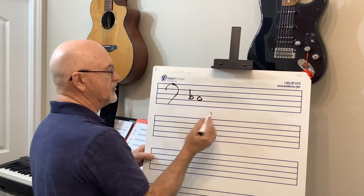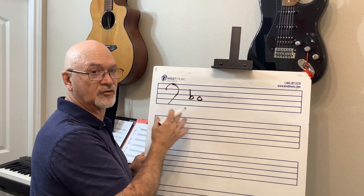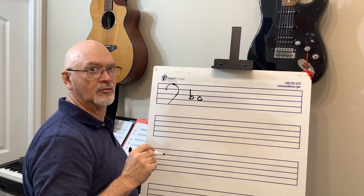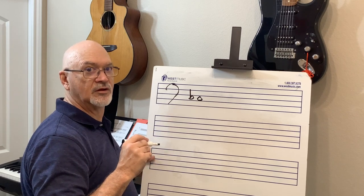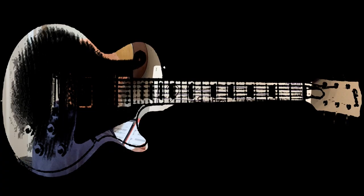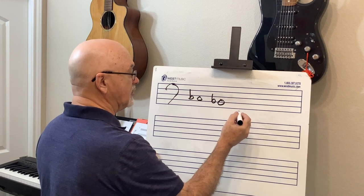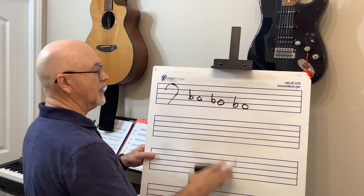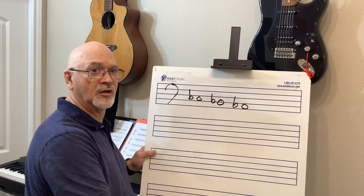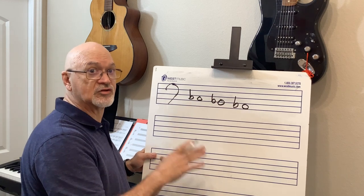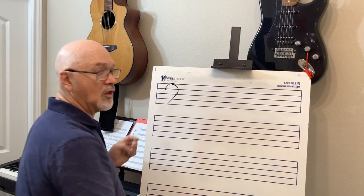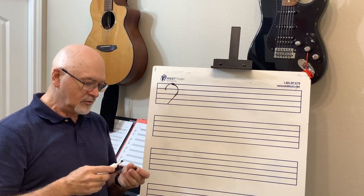Key of C-flat: the leading tone is B-flat — C-flat looks like a B on the piano, so a half step down is B-flat. A whole step down from B-flat is A-flat — that's the submediant. A-flat minor uses the same key signature as C-flat major. So knowing your submediant and leading tone is super important.